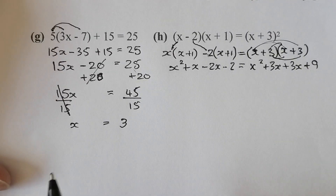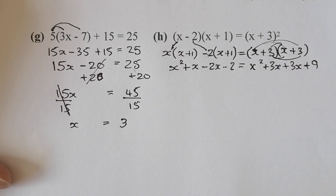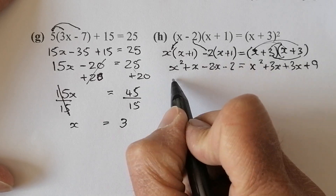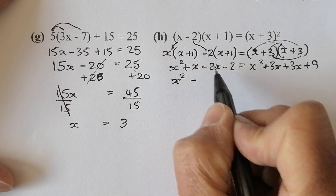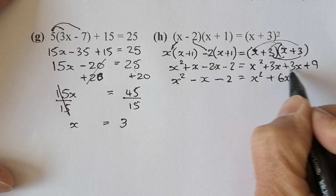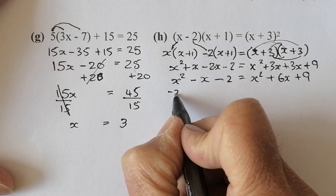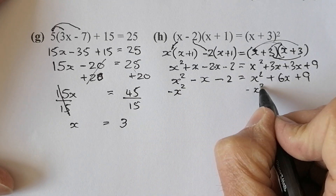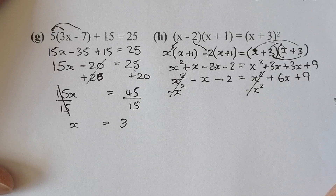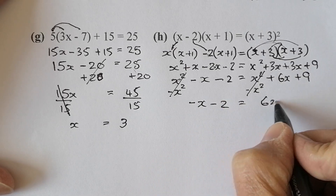I've got quite a lot of work here. I could notice that I've got an x squared on each side and could just cancel them out, but I'll go through the normal method. I'll gather up the middle terms first: that gives me x squared, then x minus 2x gives minus x, minus 2 — equal to x squared plus 6x plus 9. I don't want an x squared anywhere in this type of work, so I'm going to subtract x squared from both sides. That eliminates it — good. That still leaves me with a linear equation.